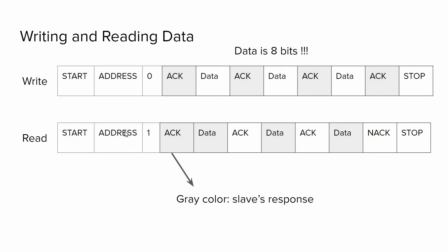Reading data from the slave works similarly: start condition, address sent by the master, then one as the read/write bit, then the slave acknowledges. After that, the slave immediately starts sending data. After every data byte, the master acknowledges the slave. When the master wants to stop the transaction, it sends a not-acknowledge bit, then a stop condition.